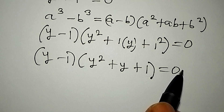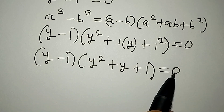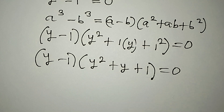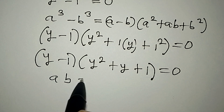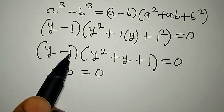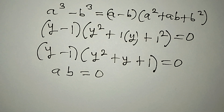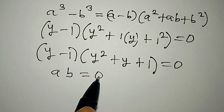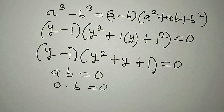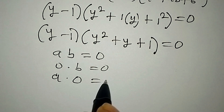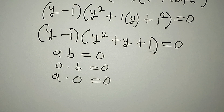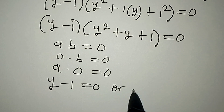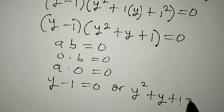We have two terms that multiply to give us 0. So it is either y minus 1 is equal to 0, or y squared plus y plus 1 is equal to 0. Just like a multiplied by b equals 0 — it is either a equals 0 or b equals 0, or both. So from here, y minus 1 equals 0, or y squared plus y plus 1 equals 0.